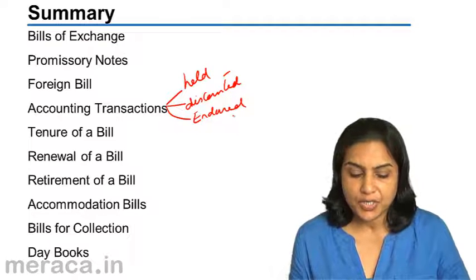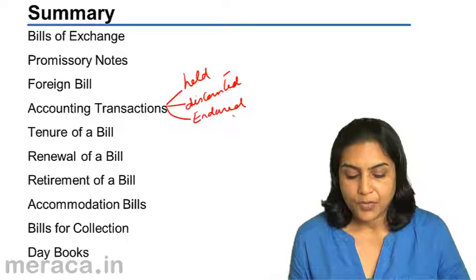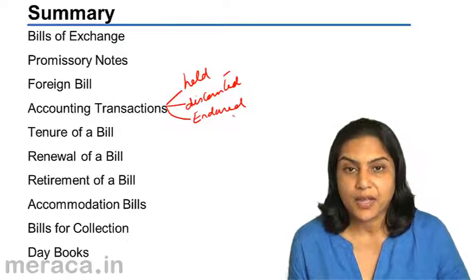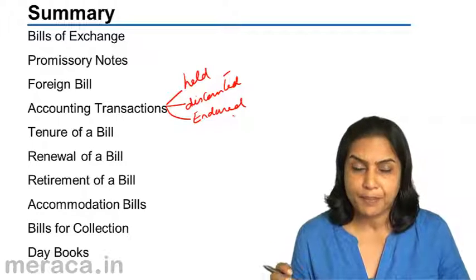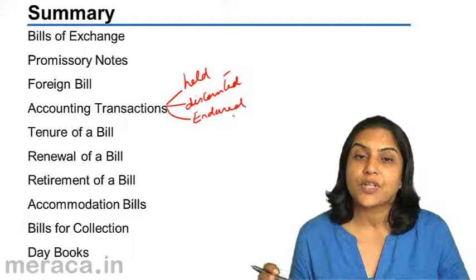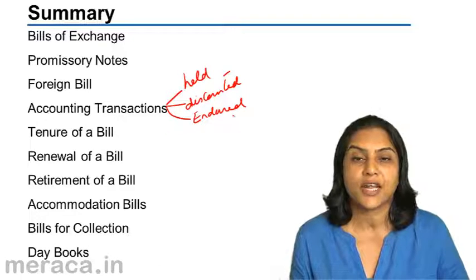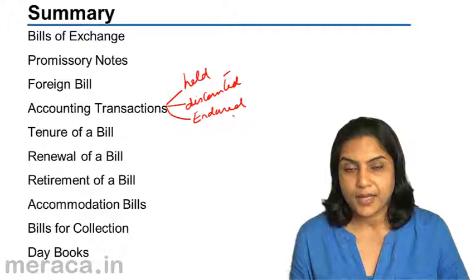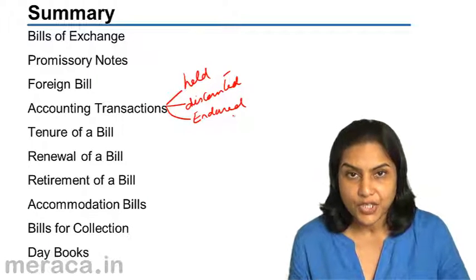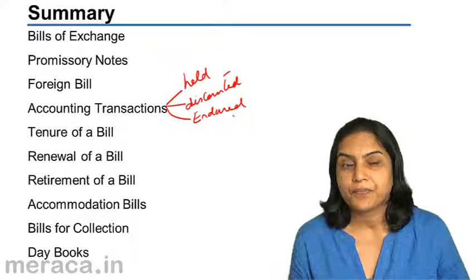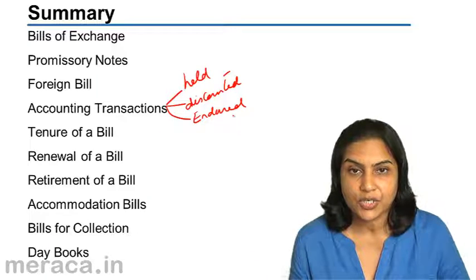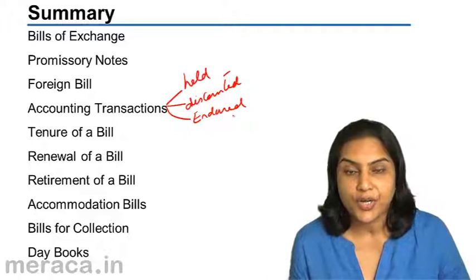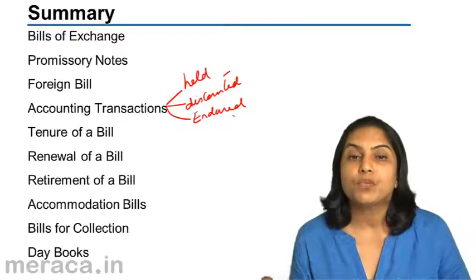Bills for collection: when bills are sent to the bank so that collection is made on the due date, they are called bills for collection. They are not sent for discounting but so that the bank can arrange collection on the date of maturity. The entry when bills are sent is: bills for collection debit to bills receivable. When money comes in: bank account debit to bills for collection. If dishonored: debtor's account debit to bills for collection.